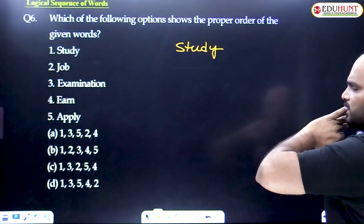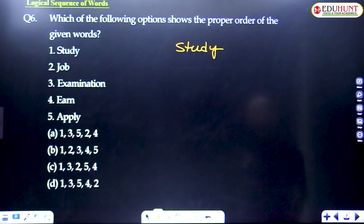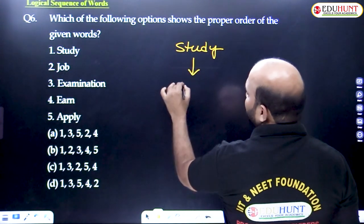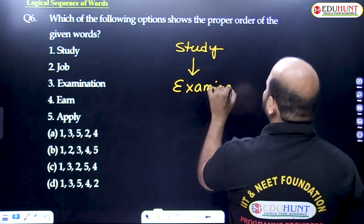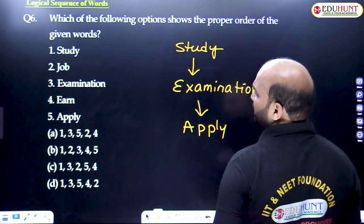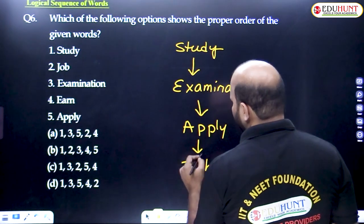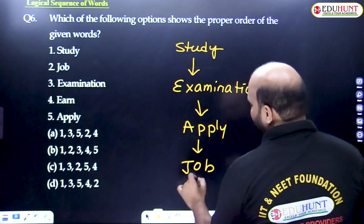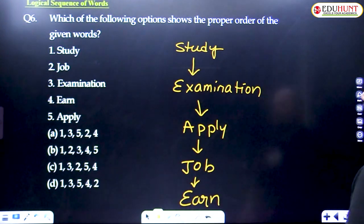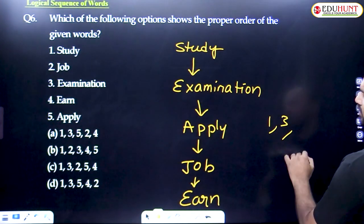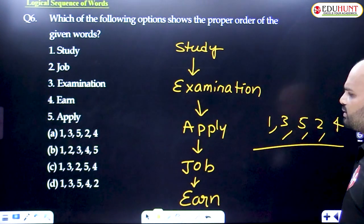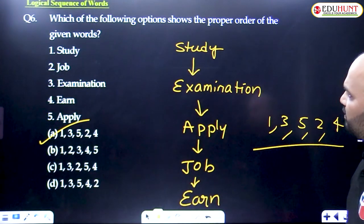First we give an exam, then apply for the exam. So examination is the third one, next apply is the fifth one, and job is the second one and earn is the fourth one. One, three, five, two, four is the sequence order of the following words. Option A is the required answer.